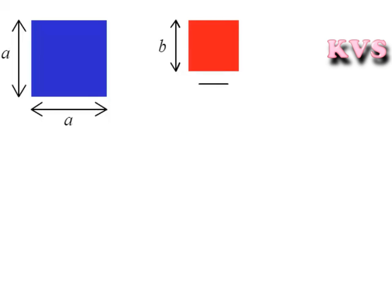Look at this red color square. The side of this red color square is B. So, the area of this square is B square.